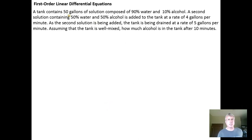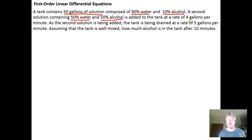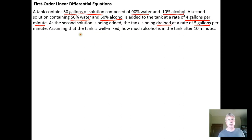A tank contains 50 gallons of a solution that is 90% water and 10% alcohol. A second solution that's 50% water and 50% alcohol is added to the tank at a rate of 4 gallons per minute. As the solution is being added, the tank is being drained at a rate of 5 gallons of solution per minute. Assuming the tank is well mixed, how much alcohol is in the tank after 10 minutes?